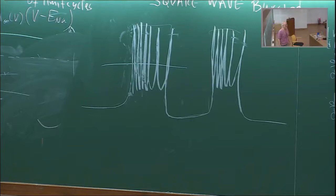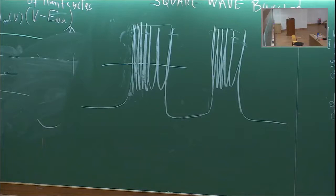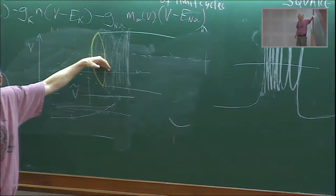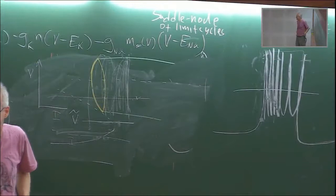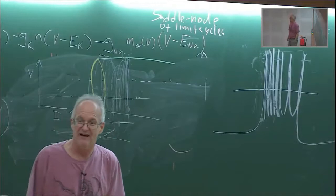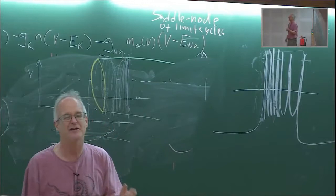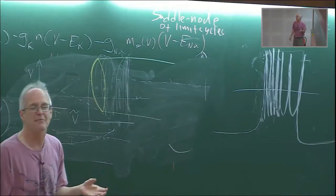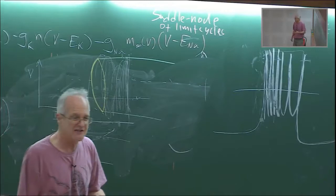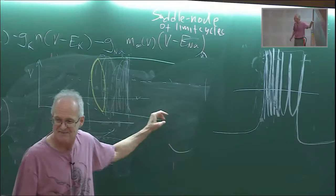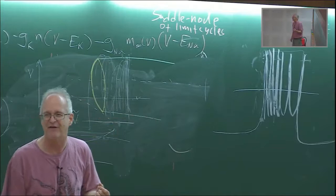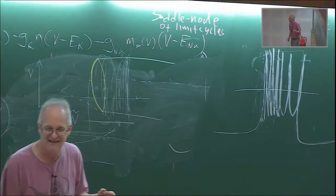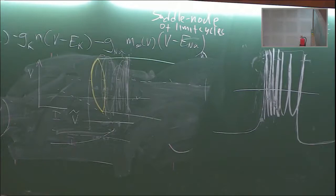So down here we get no spiking for V tilde. In here we get this bursting, and up here we get repetitive spiking. But there's a transition from bursting to repetitive spiking that's really, really complicated. And if you want to know what happens, you have to have a big background in dynamical systems and read the paper by David Terman.